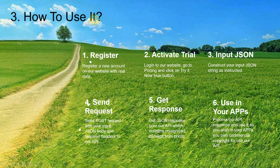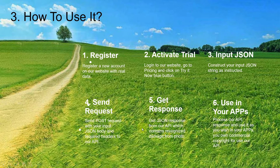How to use it? Register a new account on our website with real data. Log in to our website, go to pricing and click on the try it now blue button. Construct your input JSON string as instructed. Send a POST request with your input JSON body and required headers to our API. Get the JSON response from our API which contains recognized damage from the photo. Process our API response and use it as you wish in your apps. You own commercial copyright to use our API.